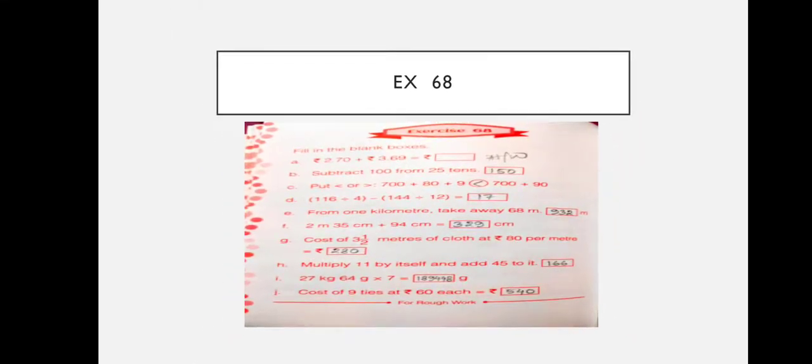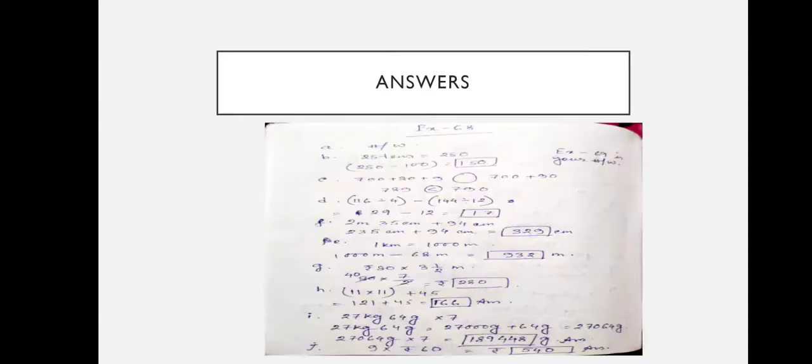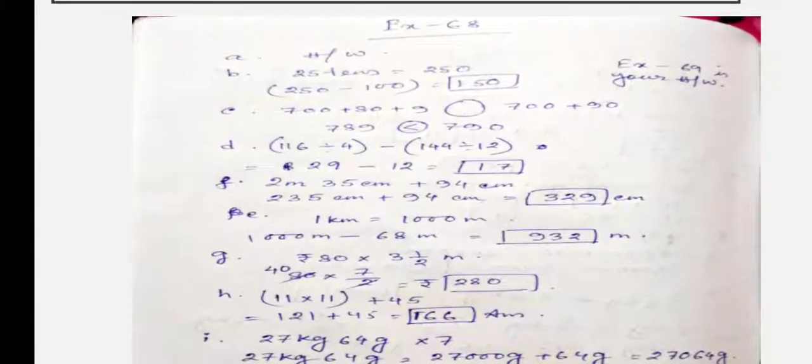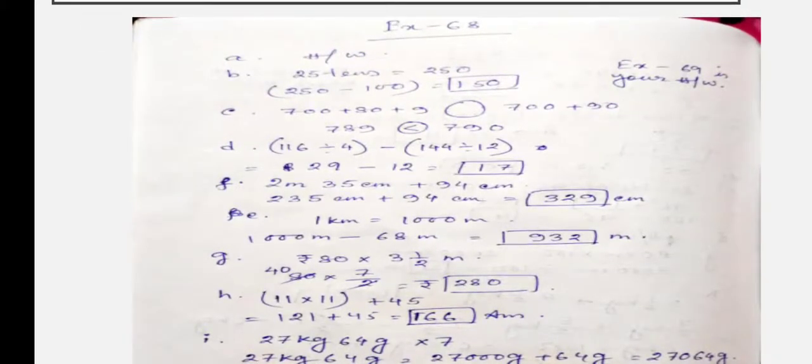Number G: cost of 3 and a half meters of cloth at rupees 80 per meter. If the price is 80 rupees per meter, then for 3 and a half meters, simply multiply 80 by 3.5 — the answer is rupees 280.